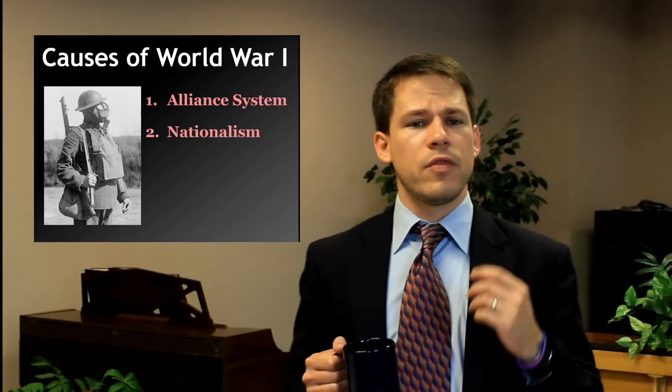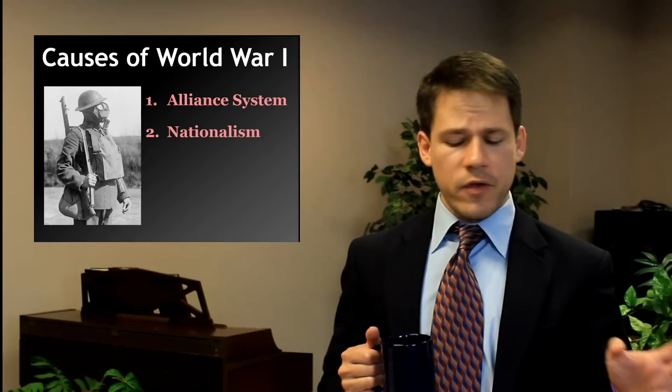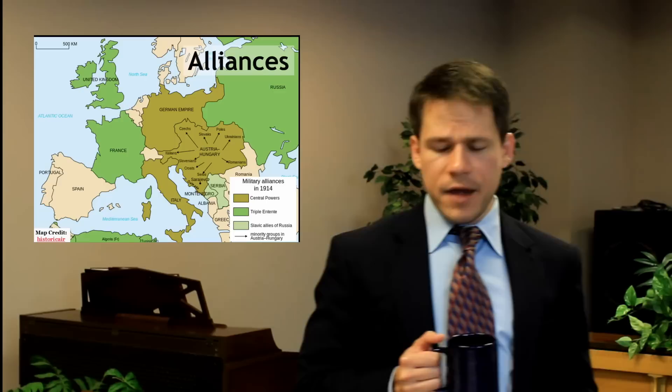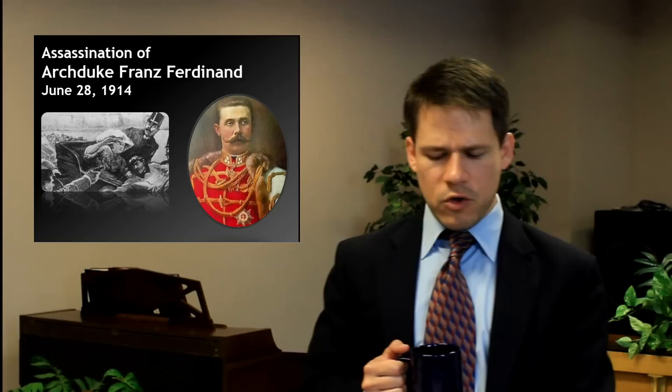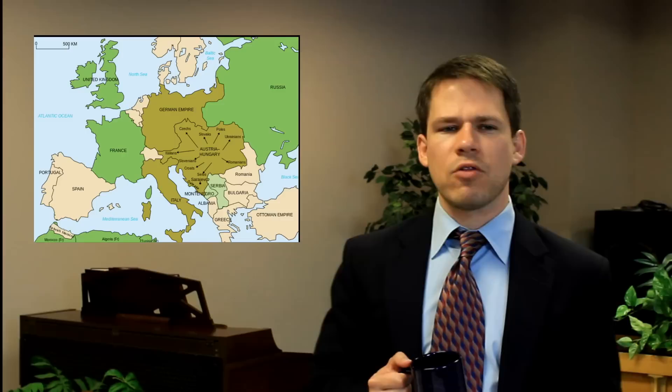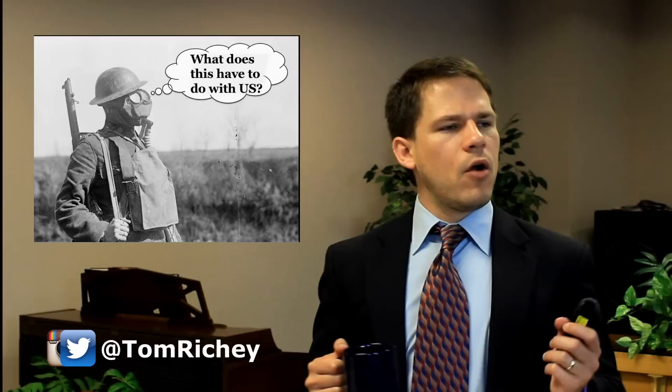The alliance system and nationalism. Now there are other causes, but as far as your curriculum guides for this exam, the alliance system and nationalism. And knowing that these alliances had a chain-reaction effect - and then you've got the assassination of Archduke Franz Ferdinand, who was assassinated by a Serbian nationalist in 1914. These alliances are invoked and it leads to a full-scale war across Europe.